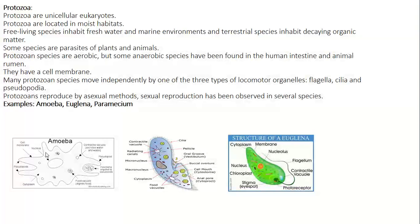Here we can see the structure of amoeba. It has a nucleus, cell membrane, pseudopodia, cytoplasm, food vacuoles, and contractile vacuoles.